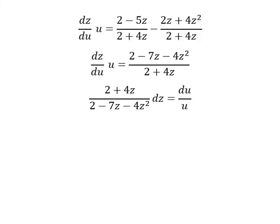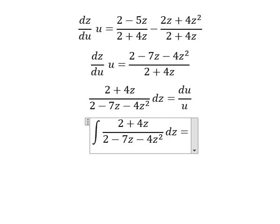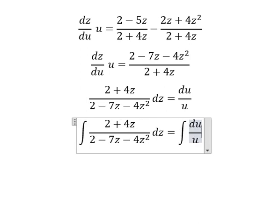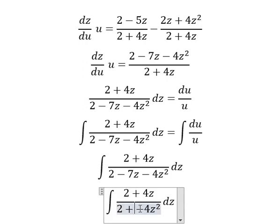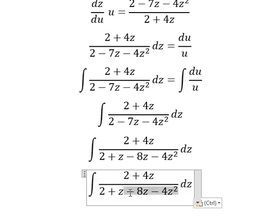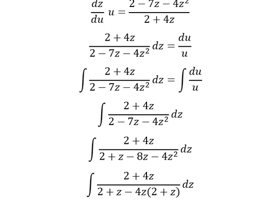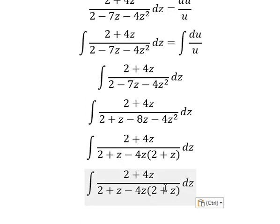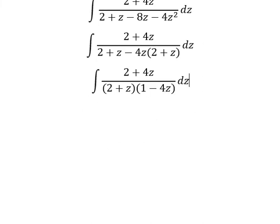Next, I will put the integration on both sides. Now I will concentrate on this fraction only. About negative 7z, I can rewrite it as positive z minus 8z, so we can factorize by negative 4z. After factorization we have factors of 2 plus z and another factor. We can use partial fractions.